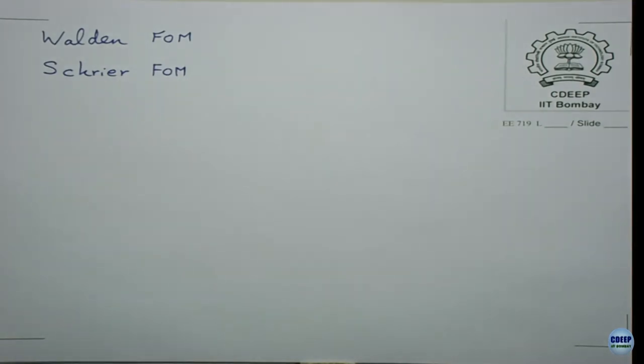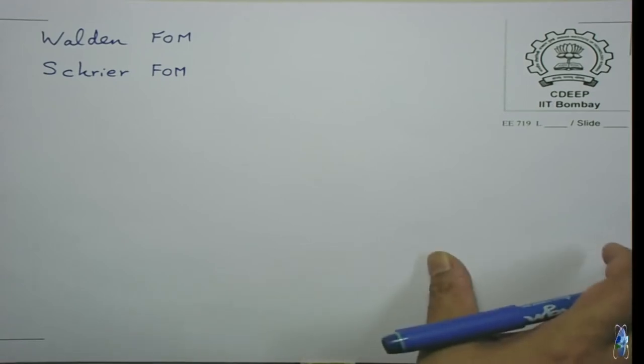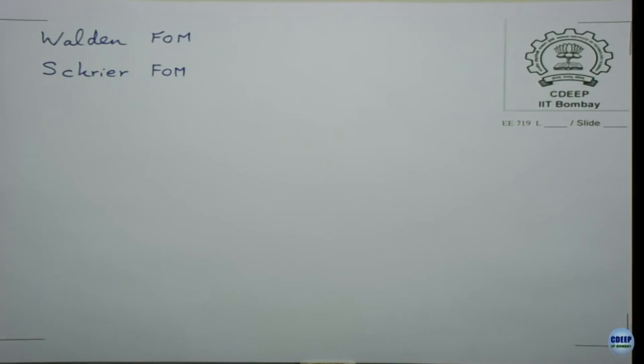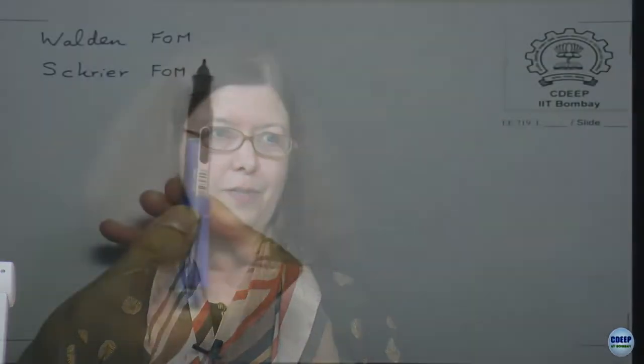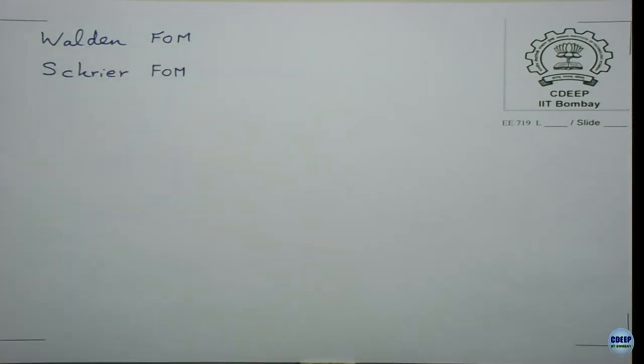Schreier was at Analog Devices and has published books and papers, with a focus on delta-sigma ADCs. Walden's figure of merit is the older one — published more than 30 years ago. It captures how power and resolution trade off. The figure of merit FOMW is defined as P divided by (2·BW · 2^ENOB), or equivalently P divided by (Fs_Nyquist · 2^ENOB).